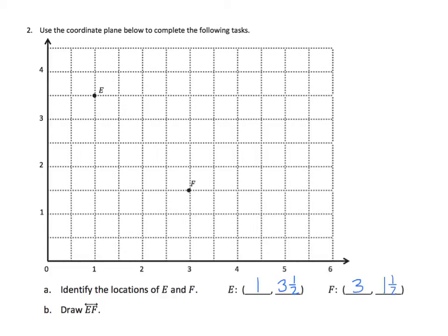Now we need to draw the line using our straight edge. Now that we have created our line, we will add the arrows at the end to designate this as a line as opposed to a line segment. Let's continue with our next task associated with problem 2.